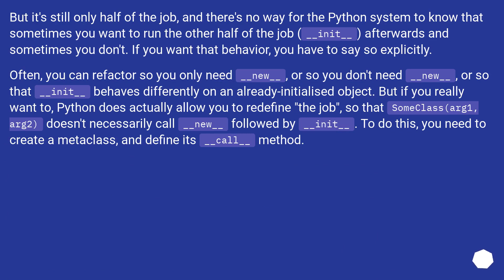Often, you can refactor so you only need __new__, or so you don't need __new__, or so that __init__ behaves differently on an already initialized object. But if you really want to, Python does actually allow you to redefine things so that SomeClass(arg1, arg2) doesn't necessarily call __new__ followed by __init__. To do this, you need to create a metaclass and define its __call__ method.